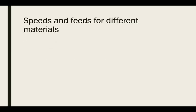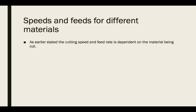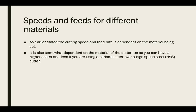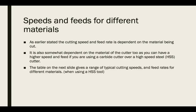The cutting speed and feed rate are dependent on the material being cut, and also somewhat on the material of the cutter being used. If you are using a high speed steel cutter it will have to run slower than if you are using a carbide cutter. The table on the next slide gives the range of typical cutting speeds and feed rates for different materials when using a high speed steel tool.